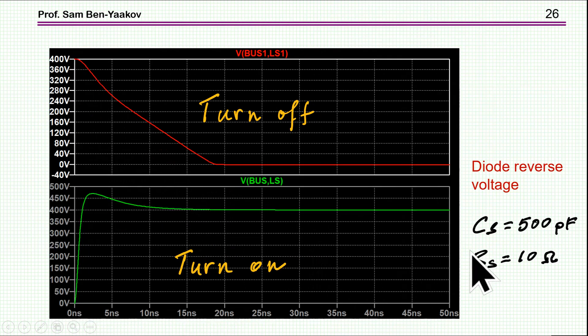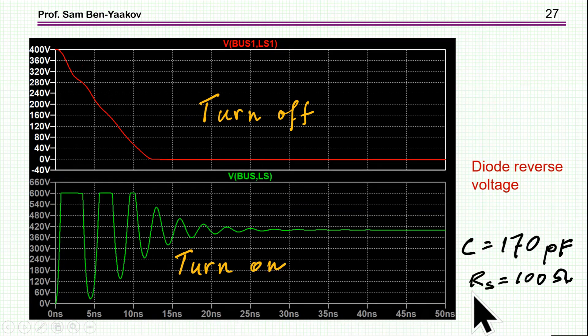If I increase the capacitor to 500 picofarads, then obviously, the overshoot is smaller, for the reason that we have said, because the capacitor is larger, so it can absorb the energy at a lower voltage, but the turn off will be longer, the discharge. And then if I choose the resistor to be very high, then I got this again, over voltage here, which is no good.